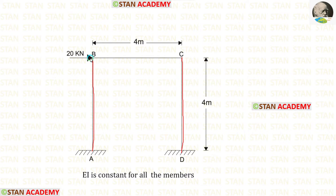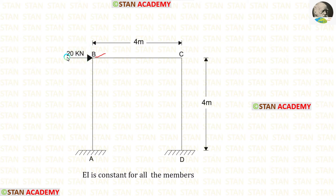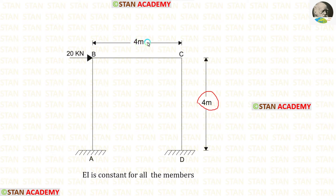Also, there is a beam BC. At point B, there is a nodal point load of 20 kilonewtons. This load is acting towards the right side. The height of the columns is 4 meters and the length of the beam is also 4 meters. The flexural rigidity EI is given as constant for all members.